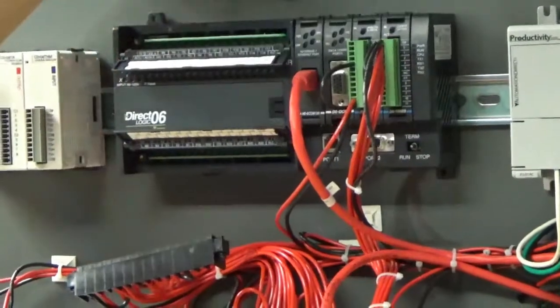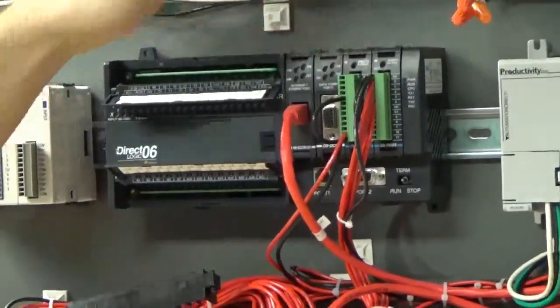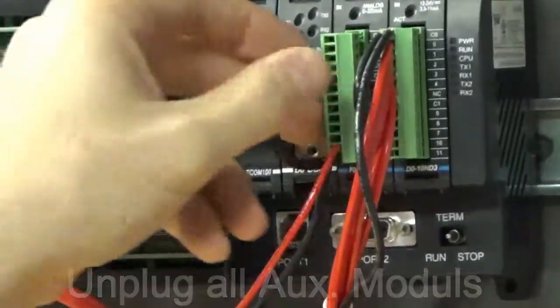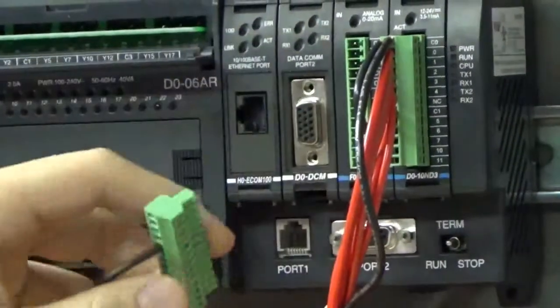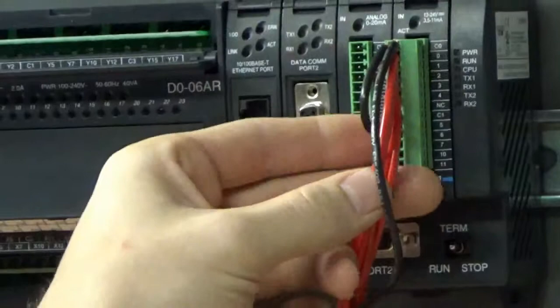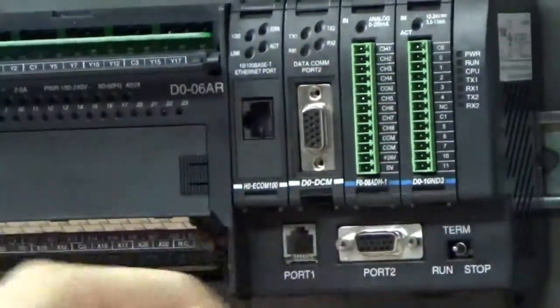Next, if you're using any of our communication modules or analog modules, we're just going to unplug those. Here's our Ethernet. This is an analog 0 to 40 milliamp. Next is an analog input for 0 to 24 volts.